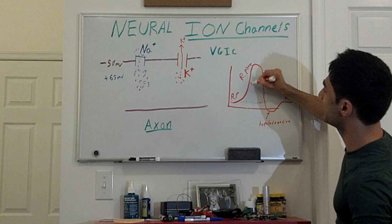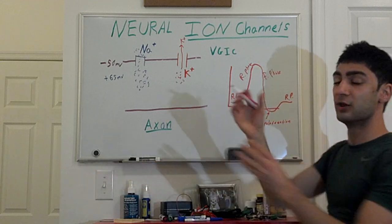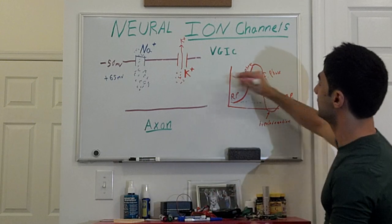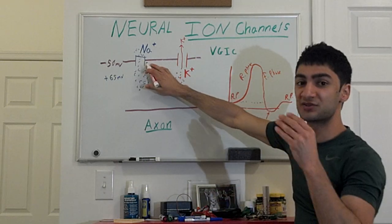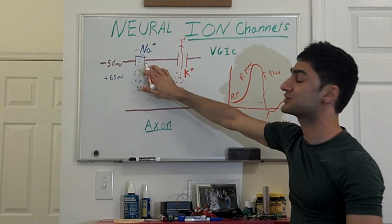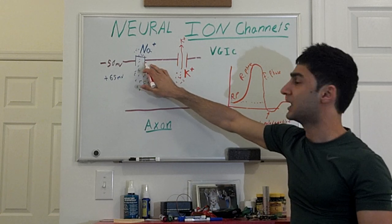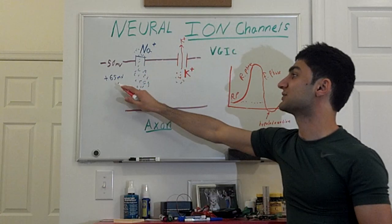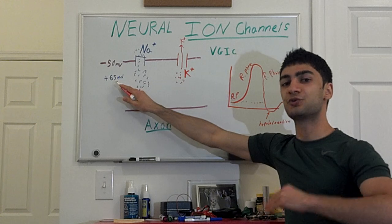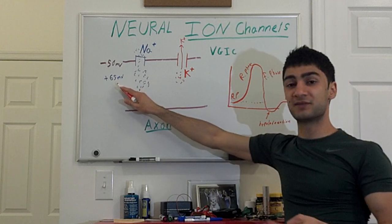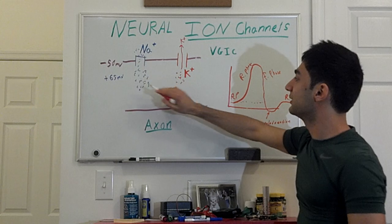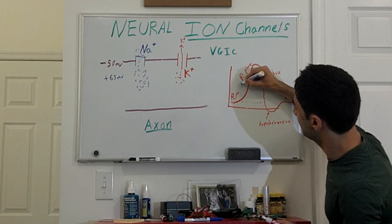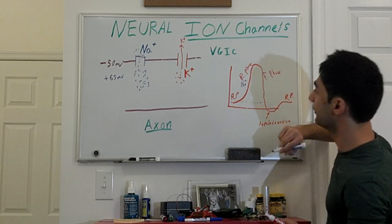Let's focus on the rising phase. We have resting potential, and all of a sudden we get a stimulus — it triggers an action potential. Sodium ions are going to start flowing into the cell because these voltage-gated sodium channels open up, and once they open up, sodium is going to start flooding into the cell membrane. This causes depolarization which raises the voltage of the cell — and this is associated with the rising phase. This is sodium flowing into the cell.